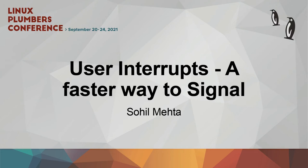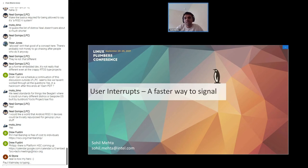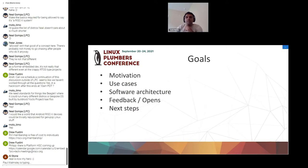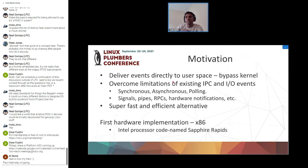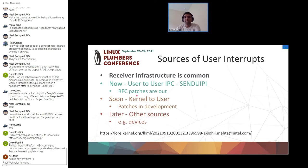User interrupts, as discussed yesterday, is a really fast way to signal. Today, all inter-process communication happens through the kernel. The idea with user interrupts is to deliver events directly to user space, bypassing the kernel, which helps reduce latency. It's super fast and efficient. This feature is coming up in Sapphire Rapids, an x86 processor from Intel.